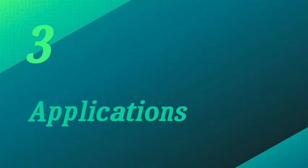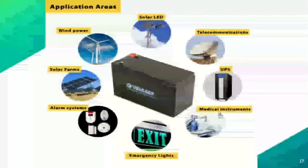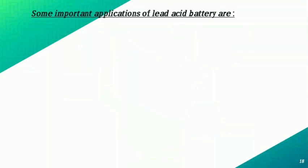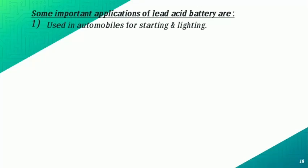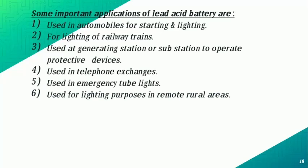Applications of lead-acid battery: This is a diagram of the application areas. Some important applications are: used in automobiles for starting and lighting; used for lighting in railway trains; used at generating stations or substations to operate protective devices; used in telephone exchanges; used in emergency tube lights; used for lighting in remote rural areas; and also used in inverter batteries.